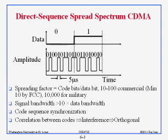That way, we can all talk at the same time on the wireless using different codes. This is like language — if we all spoke English there would be a lot of noise, but if one person spoke English, one spoke Chinese, one Spanish, one Hindi, there is no interference. Everybody is tuned to their code. When we use a language, that is our code — Code Division Multiple Access, CDMA.